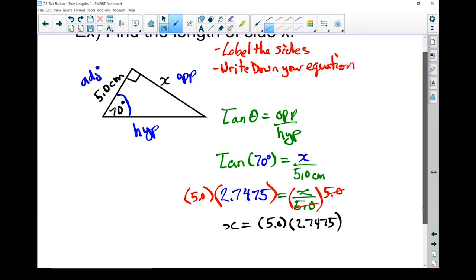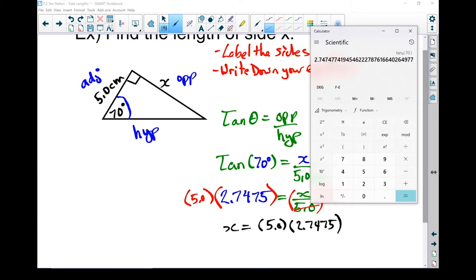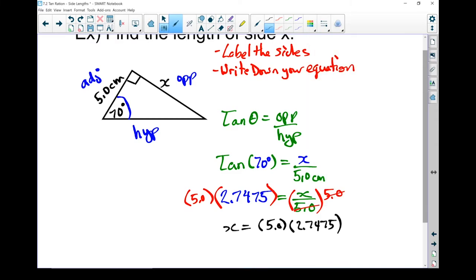These two parts will cancel each other out. So now I've got x equals 5 times 2.7475. So if I go to my calculator, you'll notice I still have all those decimals in there. If I take that number right there and I multiply it by my 5, I end up with a lot more accuracy than if I'd rounded it off and used the other number. My final answer,